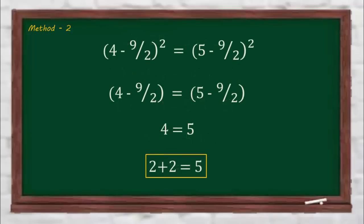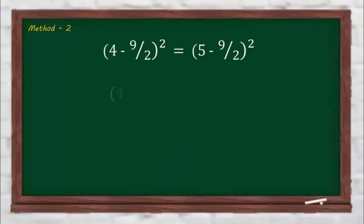In method 2, we took the square root on both sides, which is a wrong step. Square root must be taken with a plus minus sign. That indicates that the LHS may be equal to either positive value on the right hand side or negative value.